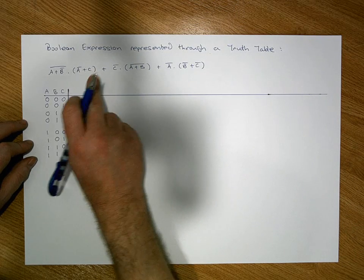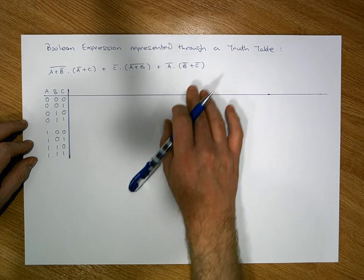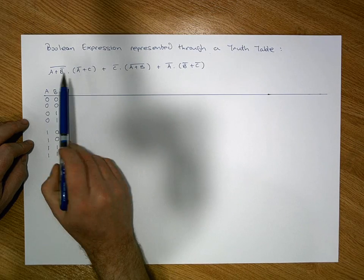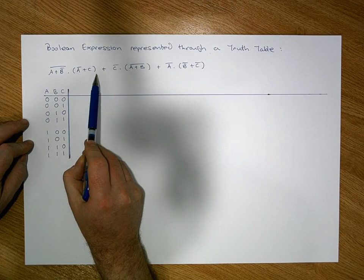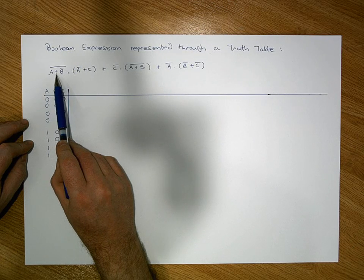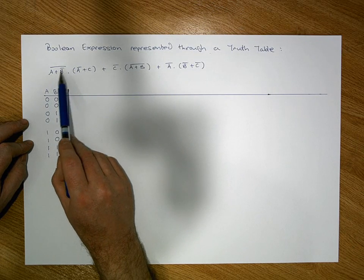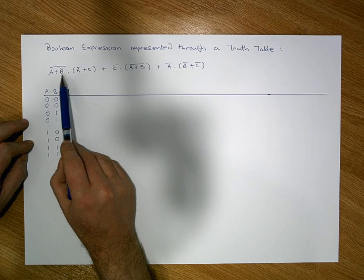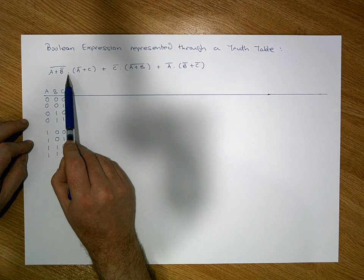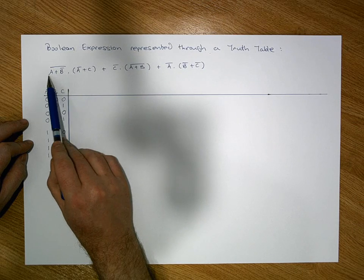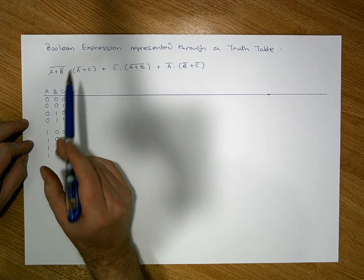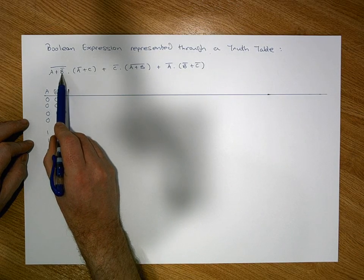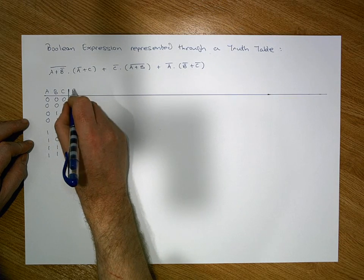We'll process the expression from left to right, term by term, then bring all the terms together to get the overall output. Looking at this particular expression, we have an A ORed with a negated B — once that's done it needs to be negated — and then ANDed with a negated A, which needs to be ORed with a C. So we have two subterms separated by this AND in the center. We'll do the left-hand side first.